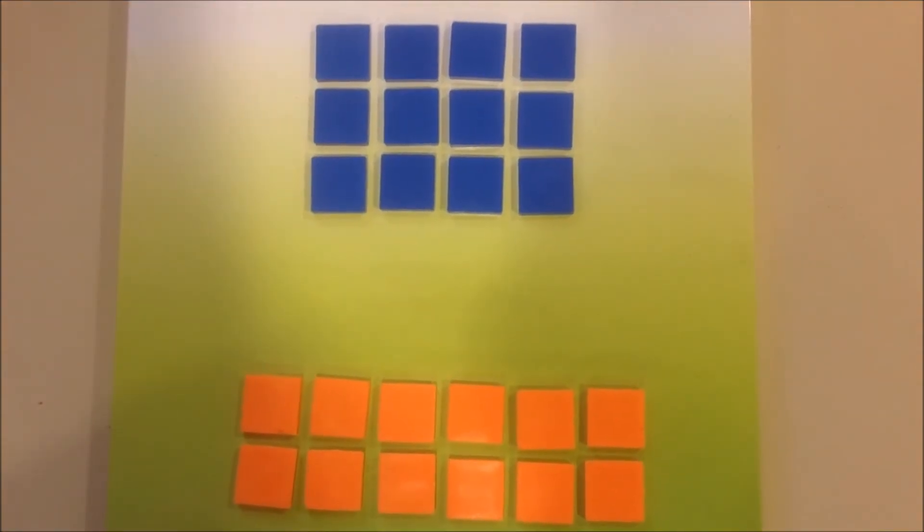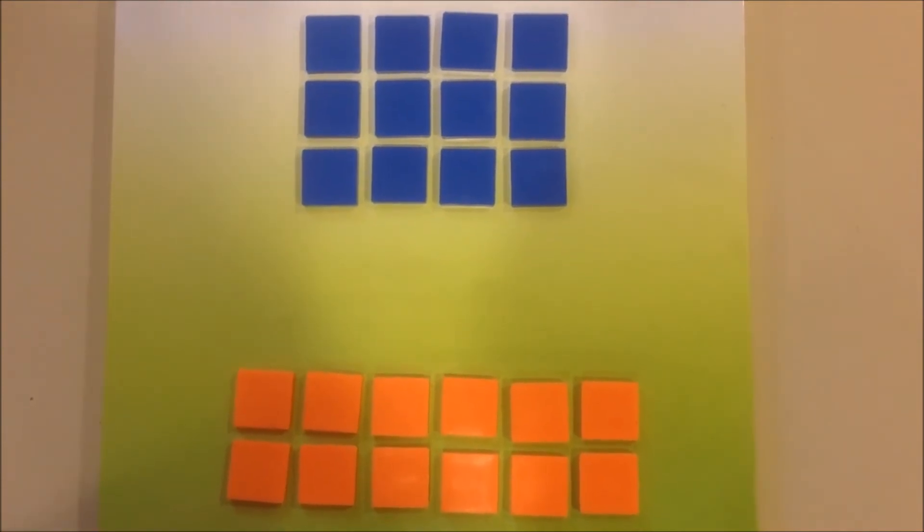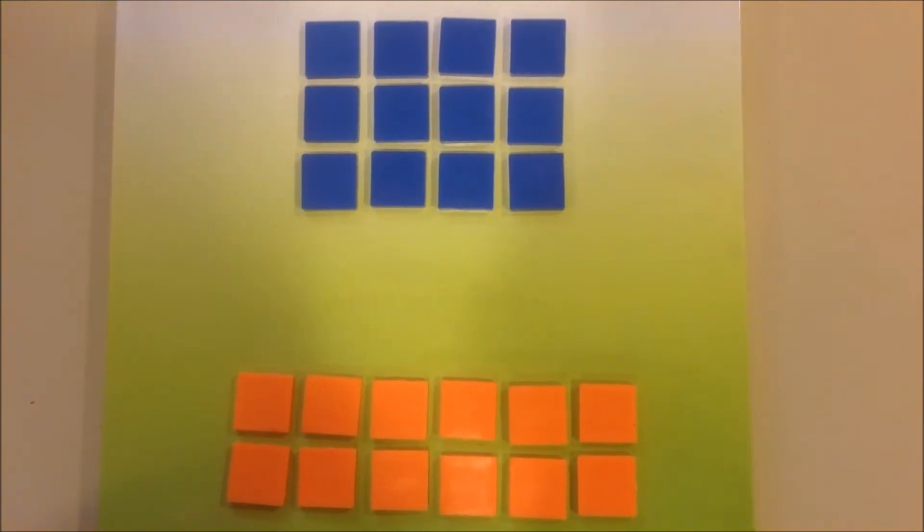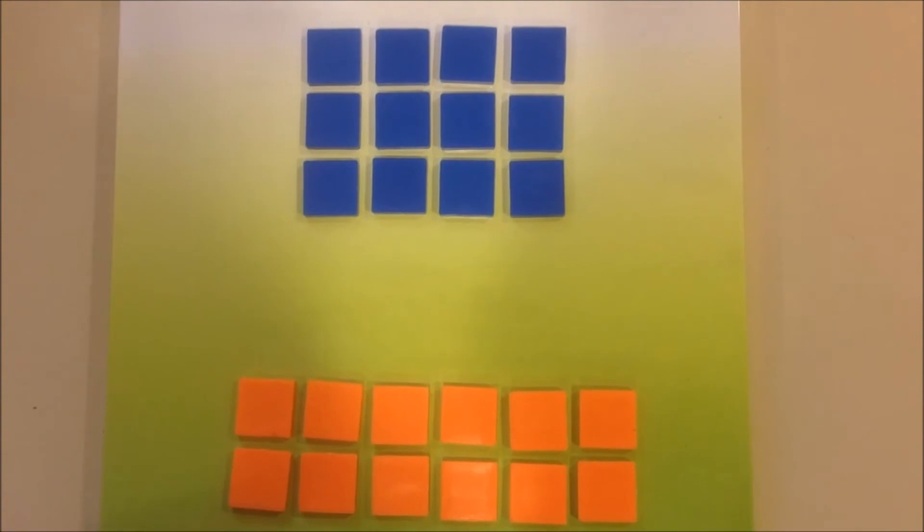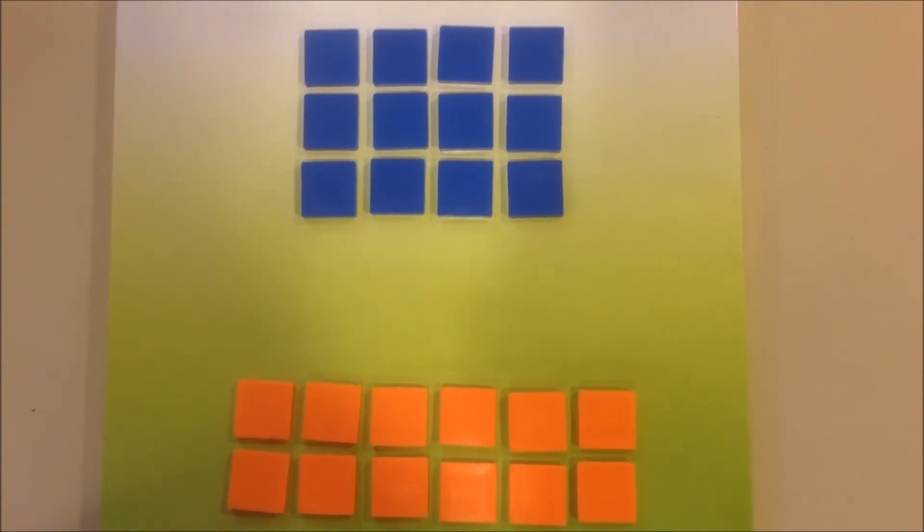We have now split both rectangles into unit squares. But how many unit squares are in each shape? That's right! There are 12 unit squares in each shape. Therefore, the area of both rectangles is 12 units squared. We can now see that both rectangles have the same area.